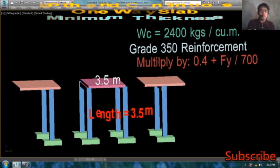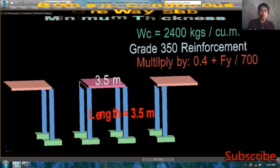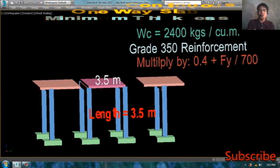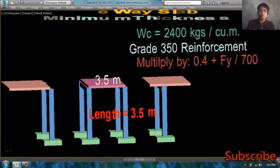Yung pong FY, 350 divided by 700, 0.5 na po yun. Ibig sabihin, 0.5 plus 0.4, 0.9 lang po pala. Yung imumultiply natin dun sa formula po natin ng minimum thickness na gagamitin natin.